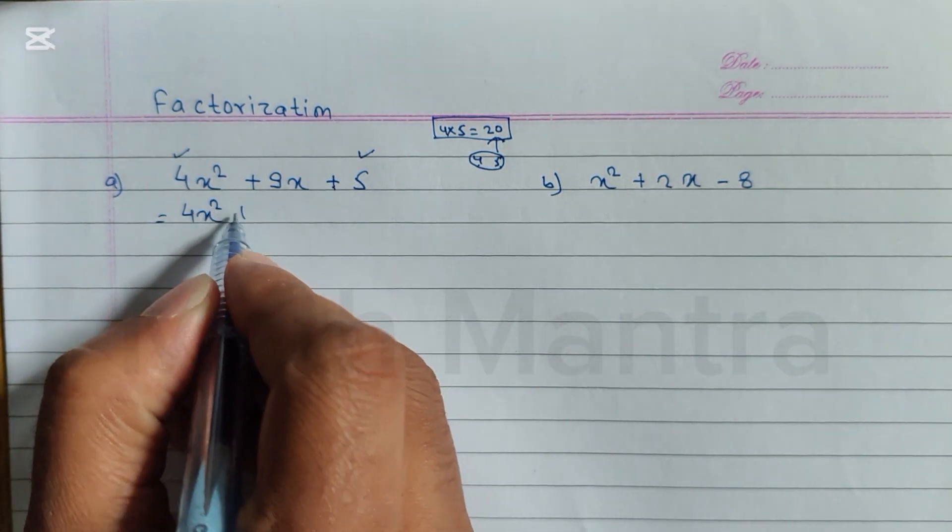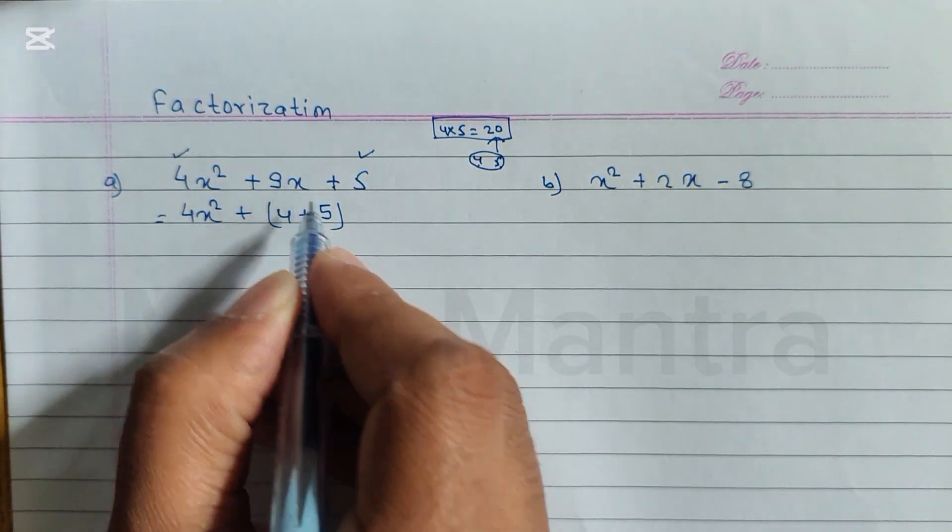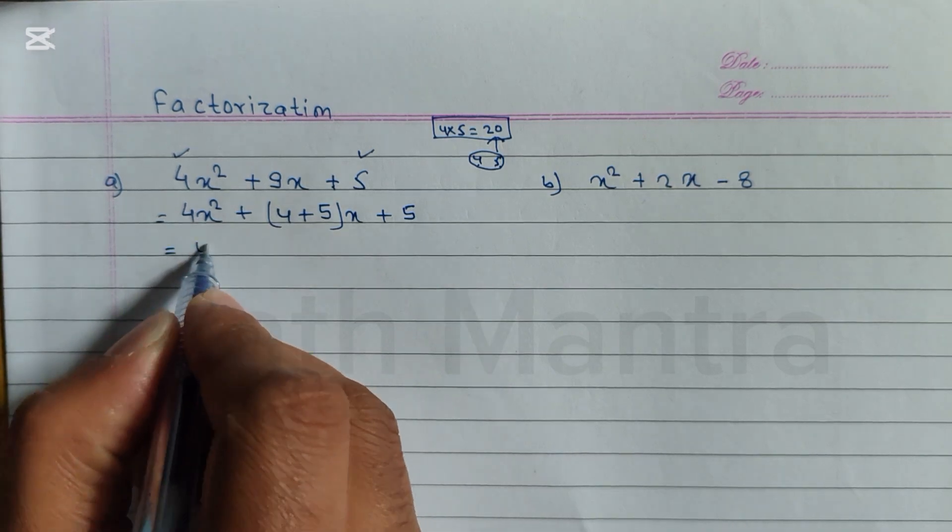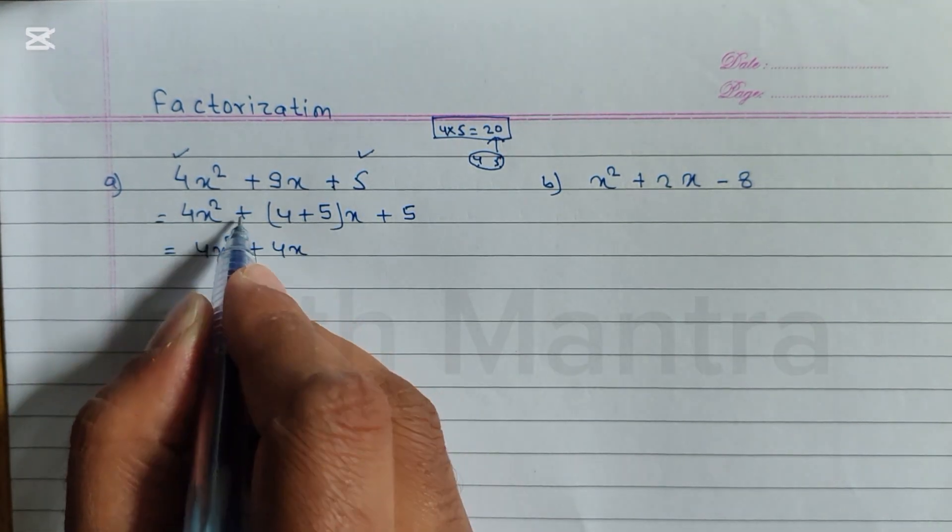So we can write here 4x² plus in the place of 9 we can write 4 + 5. Here is x, so 4x plus 5x plus 5. Now open the bracket: 4x² + 4 into x, we can write here 4x plus 5 into x, write here 5x plus 5.